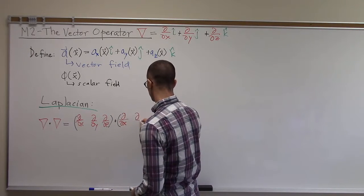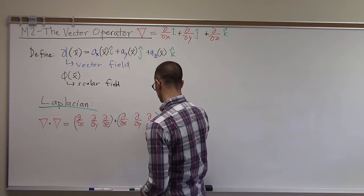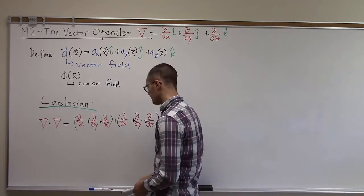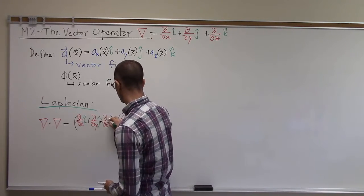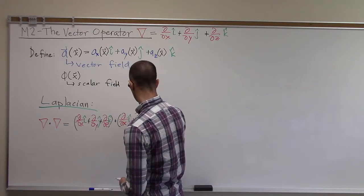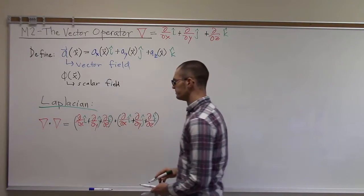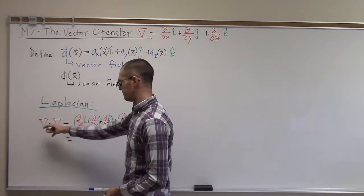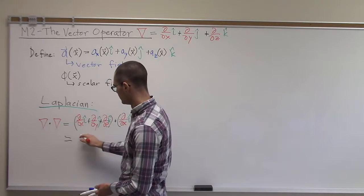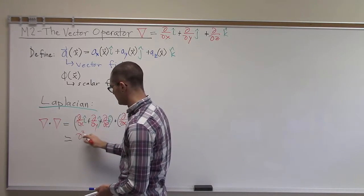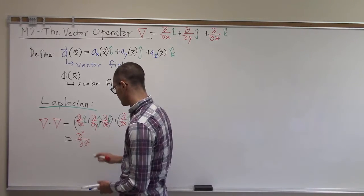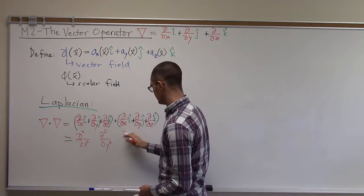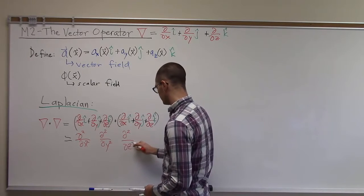Same thing over here, put in my unit vectors i, j, and k. Now if I work out this dot product, I see I've got a vector dotted with a vector, so that gets a scalar, and it's going to be d squared by dx squared, d squared by dy squared, and d squared by dz squared.